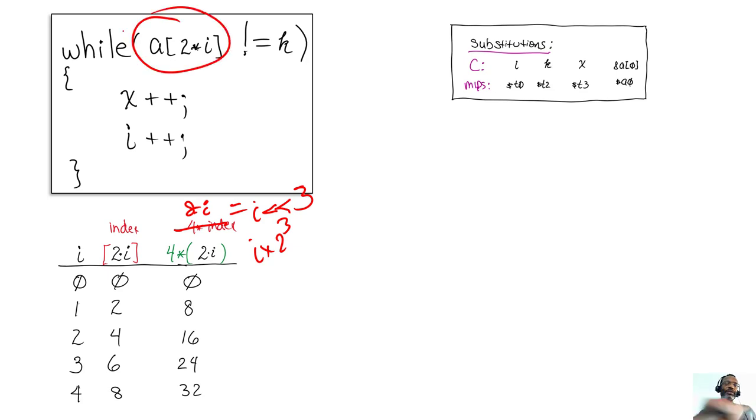So let's do that. i shifted left three times is going to be, because we need to extract this out before we can do a comparison. So that's going to be a shift left logical. i itself is going to be t0, and we're going to shift left three times. We will add that value, which is 8 times i. t1 is now 8 times i. We're going to add that value to the beginning of the array. The beginning of the array is stored inside of a0, and we'll store this, we'll just reuse t1.